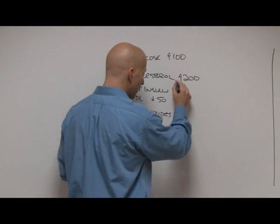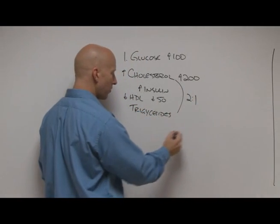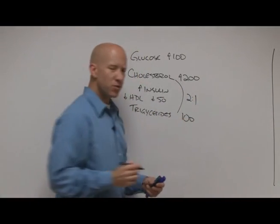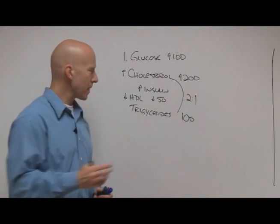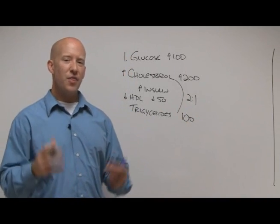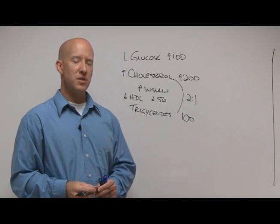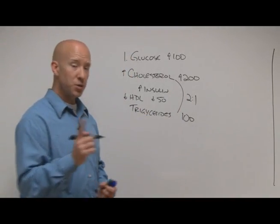What we'd look for is a cholesterol-triglyceride ratio of 2 to 1. So if somebody has a cholesterol of 200, an optimal triglyceride level would be 100. If somebody has a total cholesterol of 200 and triglycerides of 200, then you're looking at likely insulin resistance. So the closer the triglycerides are to the total cholesterol, that could be an issue.